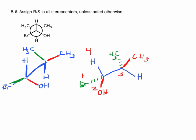Unfortunately, H, our number four group, is not a dash—it's not in the back. If it was, we'd quickly go in a clockwise or counterclockwise direction to determine if this is S. If it was a wedge, it would be almost as easy—we'd do the same thing but flip the result. Here it's in the plane of the page, which can be tricky.